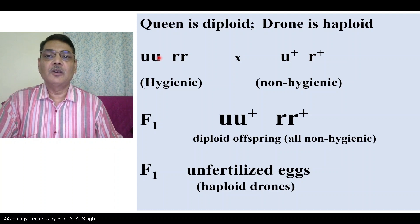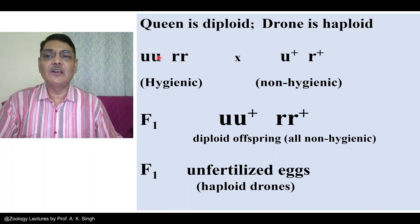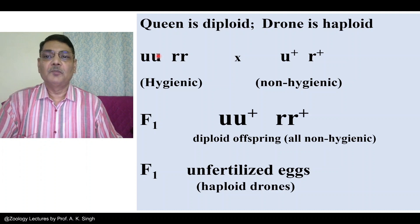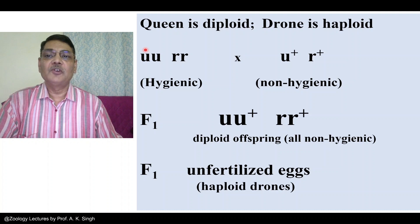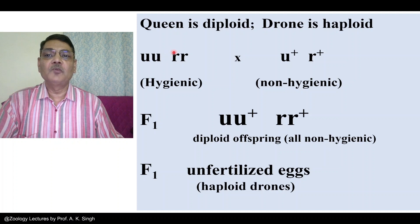In the honeybee comb, there are many cells. There are specific cells in which eggs are laid, and from those eggs larvae come out. Larvae settle in specific cells, from which pupae develop, and then pupae change into individuals. U stands for the allele responsible for uncapping the cell — meaning the wax covering the cell has to be removed. R stands for removal of dead larvae. Workers with the genotype UURR are capable of uncapping the cell and removing dead larvae.